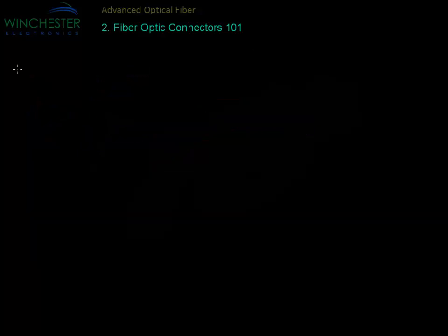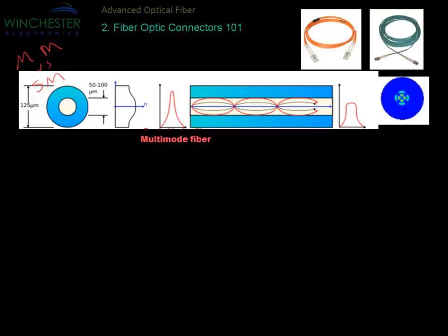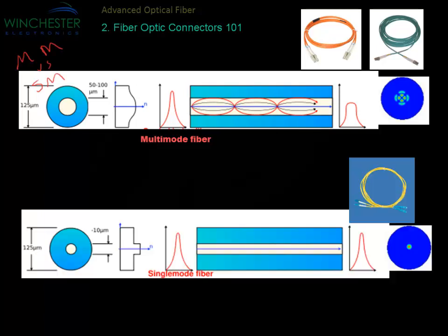Looking at the two types of fiber — multi-mode versus single-mode. For multi-mode, the core of the fiber where the light passes through is much larger than on single-mode. On single-mode, the core is quite small, around 10 microns, whereas on multi-mode it's usually 50 microns or 62.5 microns. Those are the two common core sizes.